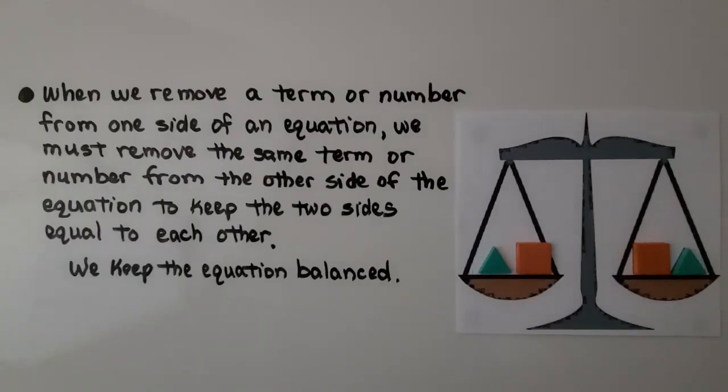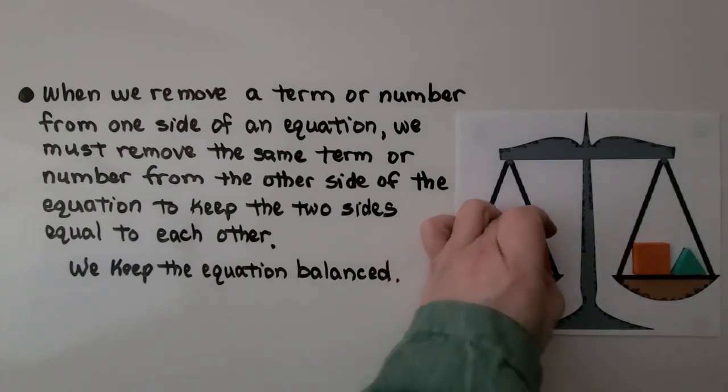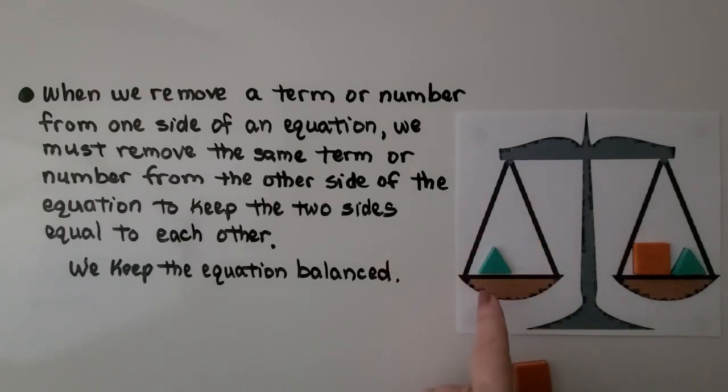When we remove a term or number from one side of an equation, we must remove the same term or number from the other side of the equation to keep the two sides equal to each other. We keep the equation balanced. If I take away the square from this side, now we just have a triangle, I would have to take away the square from this side in order to keep it balanced.